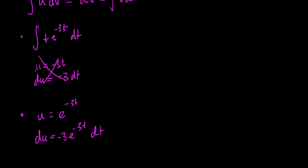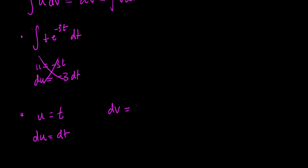Instead, I want to try letting u equal t and dv equal e to the negative 3t dt. In integration by parts we can let u equal t — in this case it's helpful. If we do that, then du equals dt, and dv must equal e to the negative 3t dt. Don't leave off the dt — whenever you have a dv you need d-whatever you're integrating with respect to. That's mathematically proper.